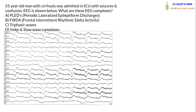This was yesterday's question: a 55-year-old man with cirrhosis was admitted in the ICU with seizures and confusion. The EEG is shown below — what are these EEG complexes? The four options are: PLEDs (periodic lateralized epileptiform discharges), FIRDA (frontal intermittent rhythmic delta activity), triphasic waves, and spike-and-slow wave complexes.